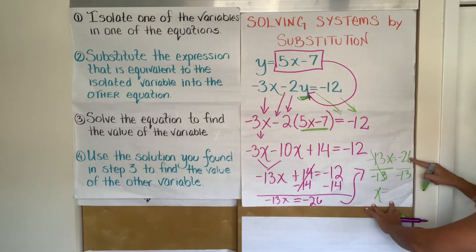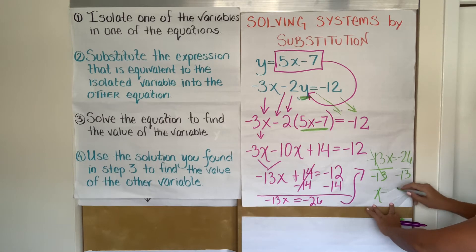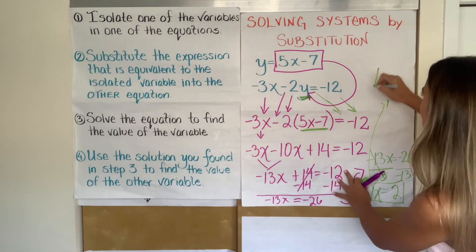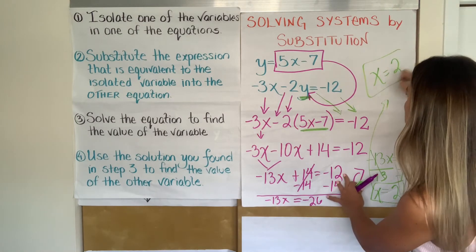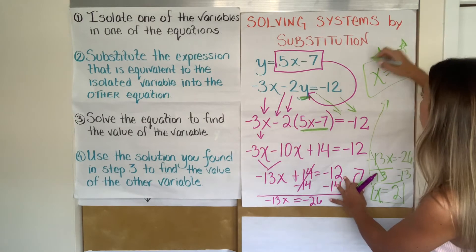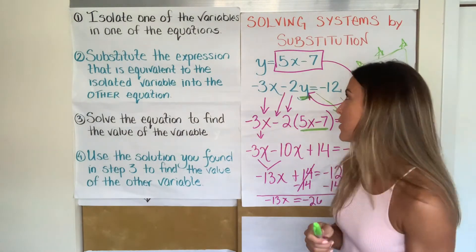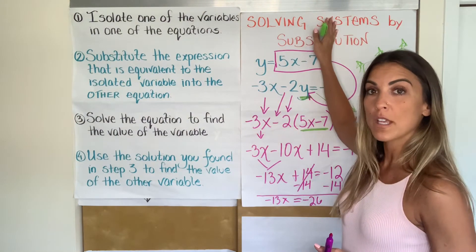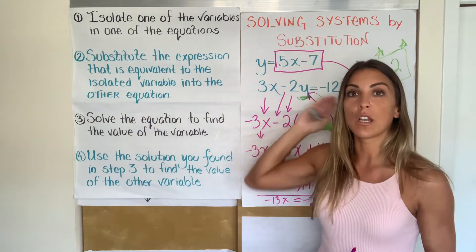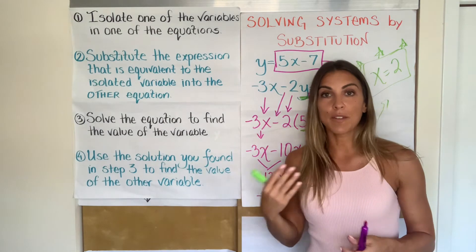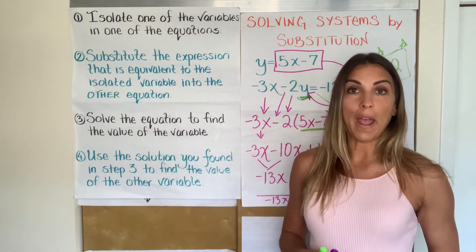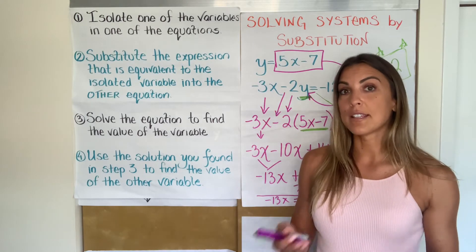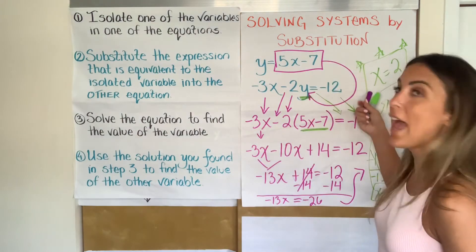They'll cancel out because negative 13 divided by negative 13 is 1. But if I do it on the left, I better also do it on the right. So now I have X equals negative 26 divided by negative 13 is positive 2. So I've got something really important. I've got X equals 2, which seems like some type of important conclusion, but the question is, am I done? Is that my whole answer?